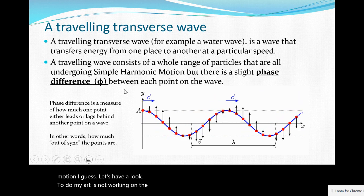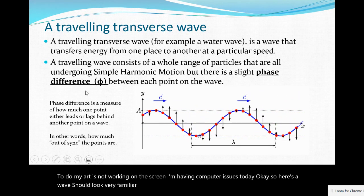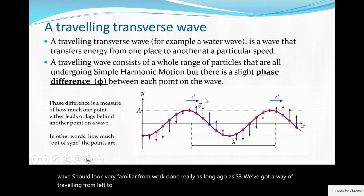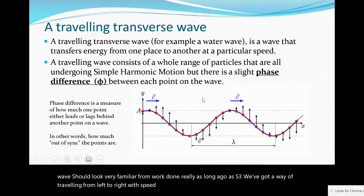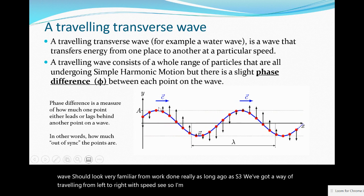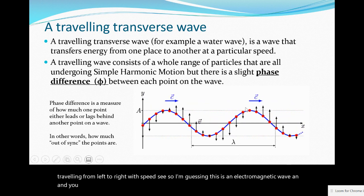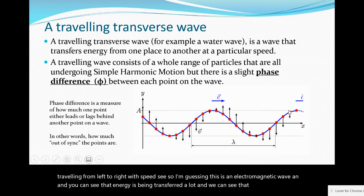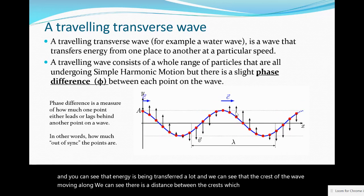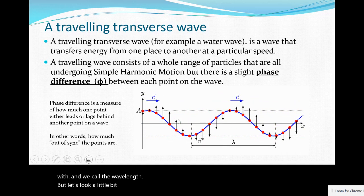Here's a wave that should look very familiar from work done in S3. We've got a wave traveling from left to right with a speed c, so I'm guessing this is an electromagnetic wave. You can see that energy is being transferred along and we can see that the crests of the wave are moving. There is a distance between the crests which we call the wavelength.